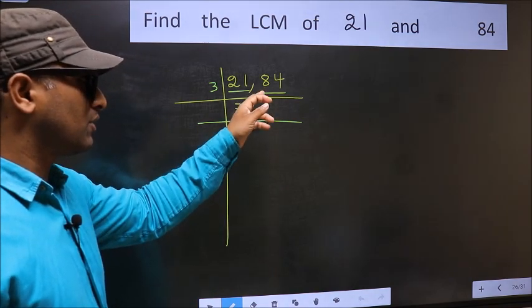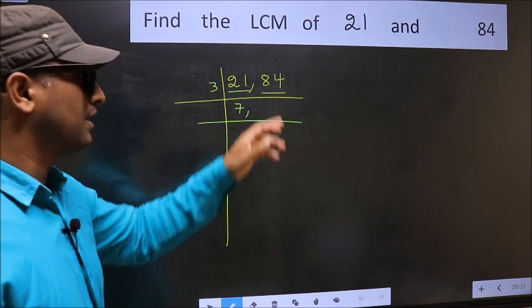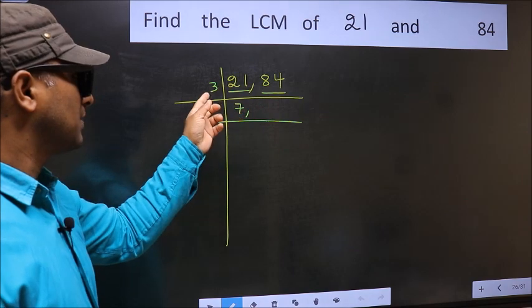8 plus 4, we get 12 and 12 is divisible by 3. So this number is also divisible by 3.